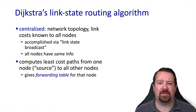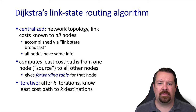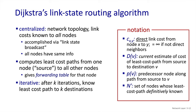From this, each router can distill the forwarding table, mapping destinations to output ports. The process used to find these least cost paths is an iterative one as the router processes the information it has received from the other routers in the network. We'll use some specific notation to describe this algorithm, which includes the cost of links between nodes, the current estimate of the cost to a particular destination, and the predecessor node along the path to the destination.